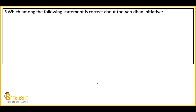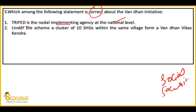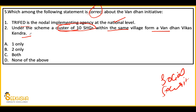Last question is more of a static question about the Van Dhan Initiative 2018. In PIB there was a conference, so this question was covered. The scheme is important especially for EPFO paper's social security part. You have to tell which statement is correct. First: TRIFED is the Nodal Implementing Agency at the national level. Second: A cluster of 10 SHGs within the same village forms a Van Dhan Vikas Kendra. Options: A — one only, B — two only, C — both, D — none of the above. The answer is C — both statements are correct.